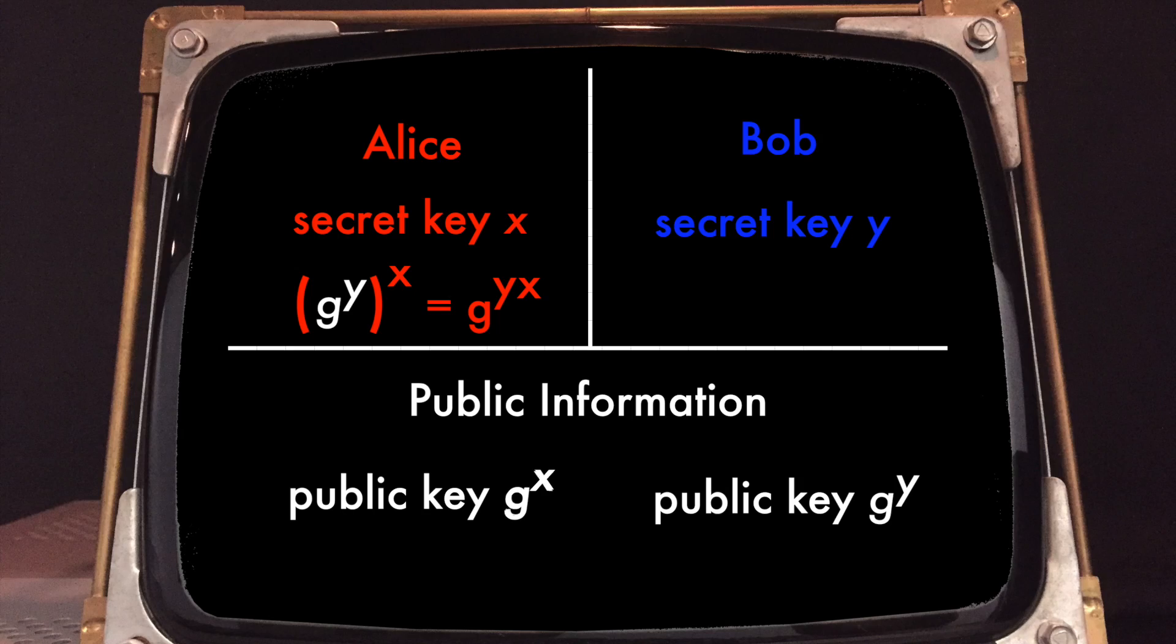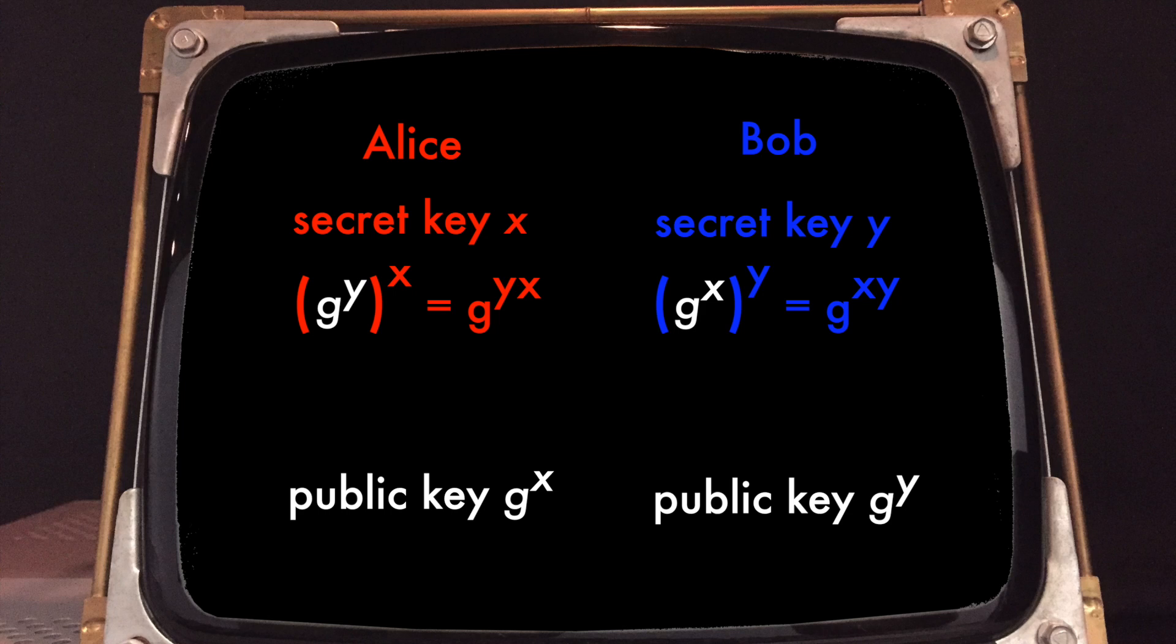Bob does the same. He takes the public key of Alice, which is G to the power X. He raises it to his secret key, which is Y. He obtains G to the power X raised to the power Y, which is G to the power X times Y. At the end of this protocol, they share a value which is common, which is G to the XY. And there's the awesome trick. Because G to the power XY is equal to G to the power YX, Alice and Bob's different computations actually lead to the same result. They now have established a shared secret.